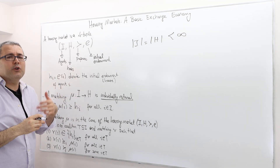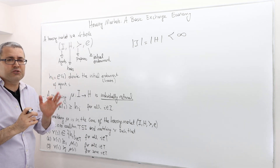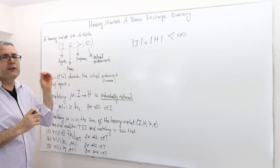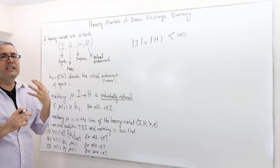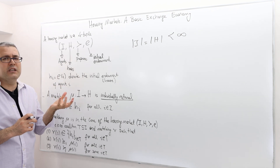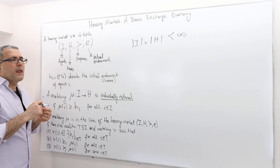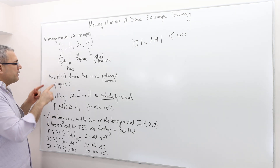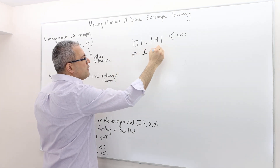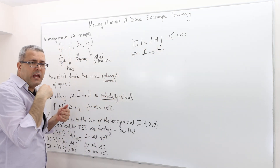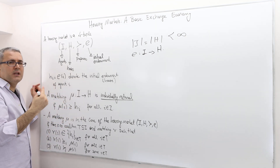The second ingredient is the preferences — preference orderings that are complete, transitive, and antisymmetric, meaning strict preference orderings over houses. So each individual has a preference relation over the houses. The third ingredient is the initial endowment, which I'm going to denote by E — basically, who owns which house. E is a matching, in fact, which maps each individual to a house — one-to-one and onto — and it tells us who owns which house.